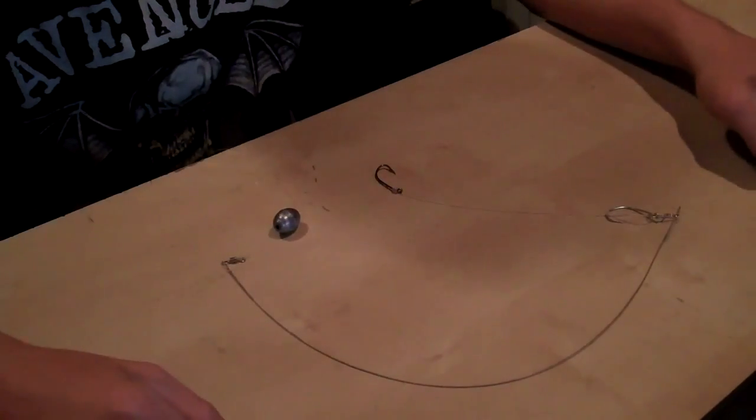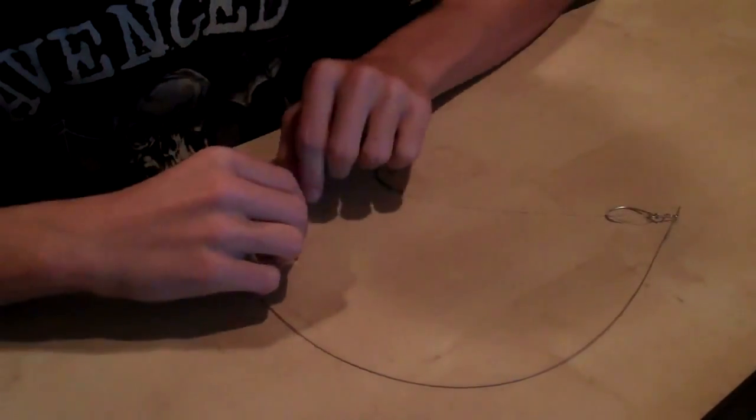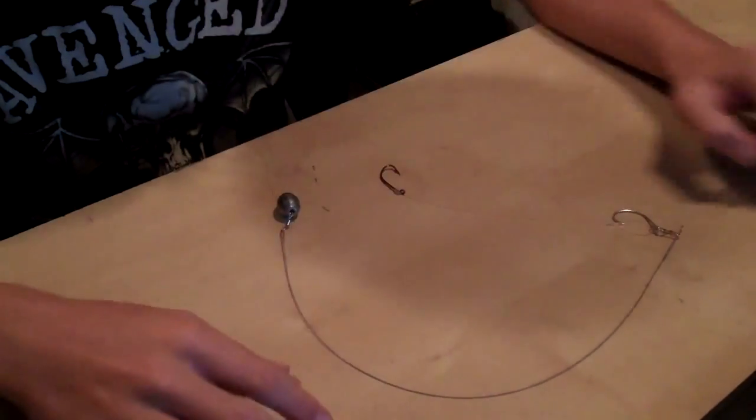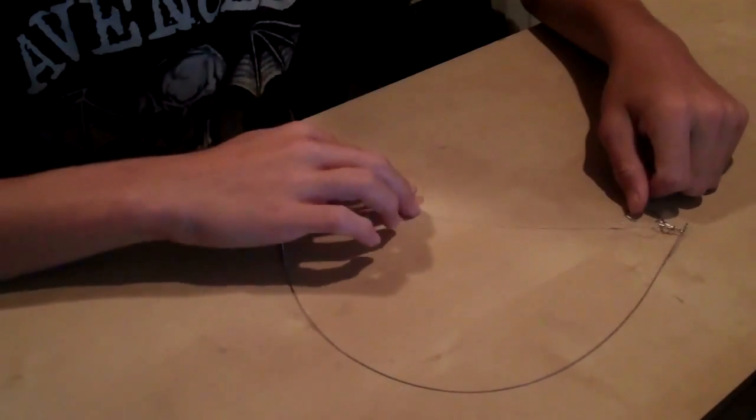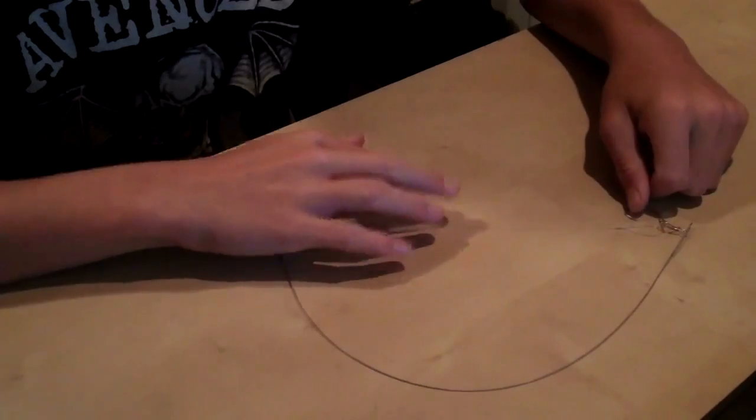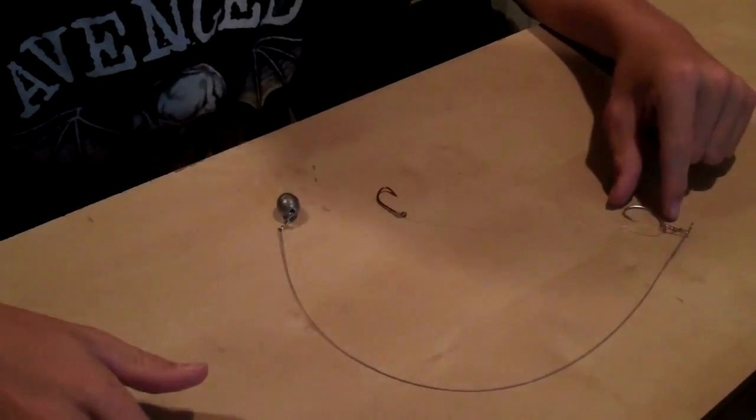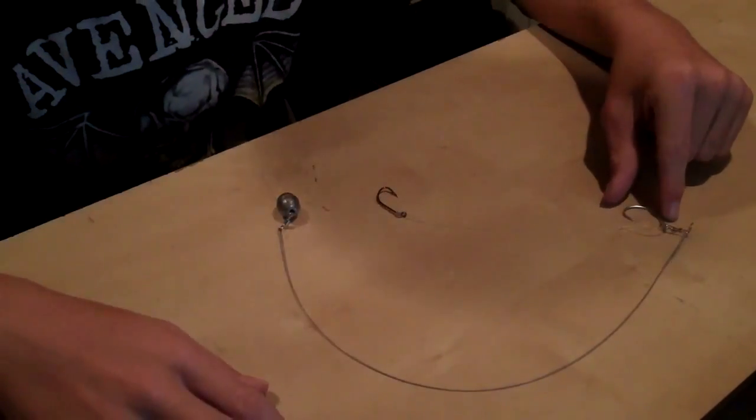And there you go, you've got an easy saltwater live bait rig. And another couple more modifications you could do to this rig is you don't need this stinger hook right here if you're going for shark or something like that.